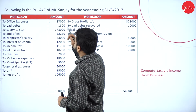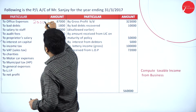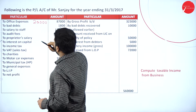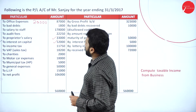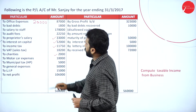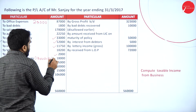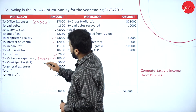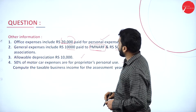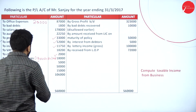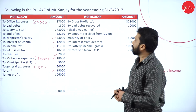Allowable depreciation is as per income tax. 50% of motor car expenses are proprietor's personal use, so half you have to consider as personal. Compute the taxable business income for the assessment year 2017-2018. Office expenses — as per adjustment, 20,000 paid for personal, so you take only 20,000. Bad debts, salary to staff, audit fees are part of the business. Proprietor's salary and interest on capital — yes. Income tax — yes. VAT — no. Charity — yes. Motor car expenses — only 50%. Municipal tax — yes. LIP — yes. Net profit — no.